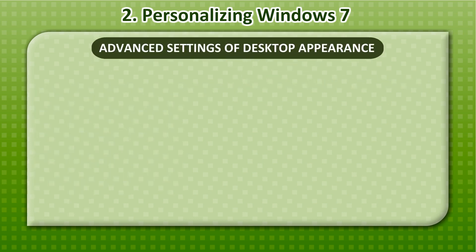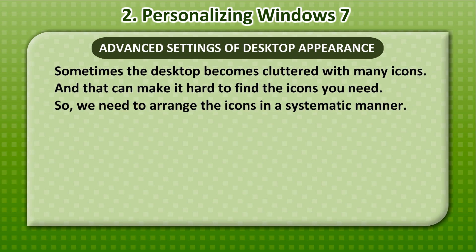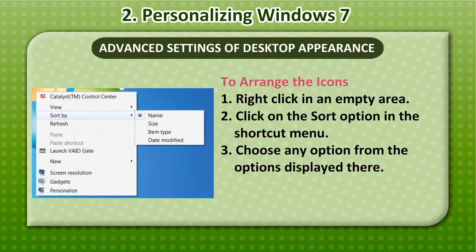Advanced Settings of Desktop Appearance: Sometimes the desktop becomes cluttered with many icons and that can make it hard to find the icons you need. So we need to arrange the icons in a systematic manner. To arrange the icons: 1. Right-click in an empty area. 2. Click on the Sort option in the shortcut menu. 3. Choose any option from the options displayed.